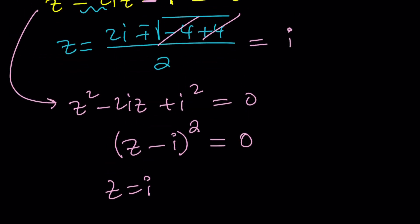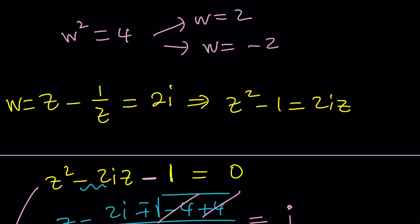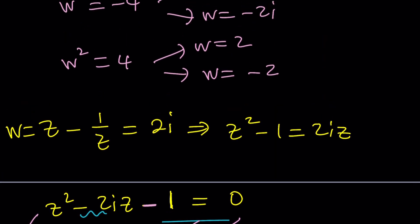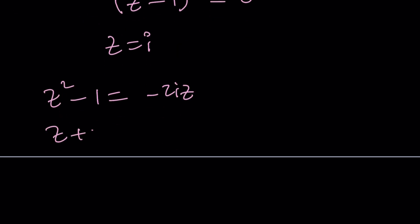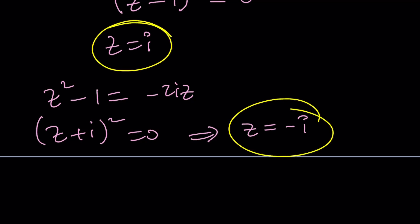But we only got this for one of the factors. If you set this equal to negative 2i, then you're going to get something like this. And then when you put everything on the same side, you're just going to get this. And from here, z is going to become negative i. Remember, we were looking for z, not for w. And we got two of the solutions. How many solutions in total are there?